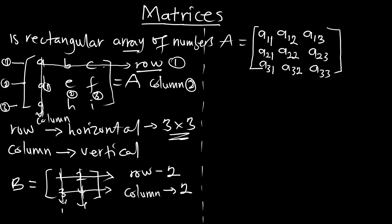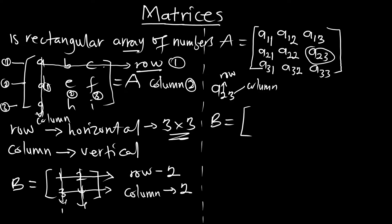So if I ask you to point at the number a₂₃, straight away you know that it is on row two, column three. You count the rows — this is the second row — and the columns: one, two, three. So this is the number at row two, column three.